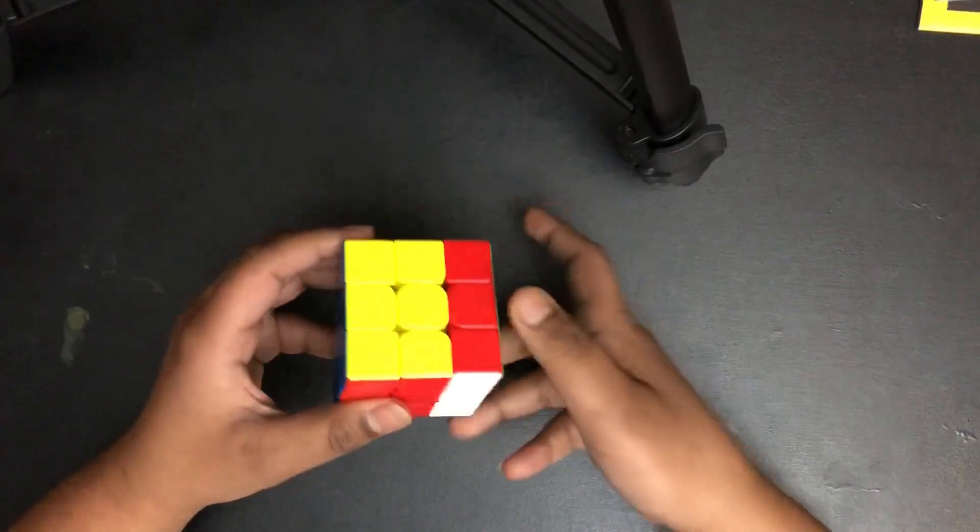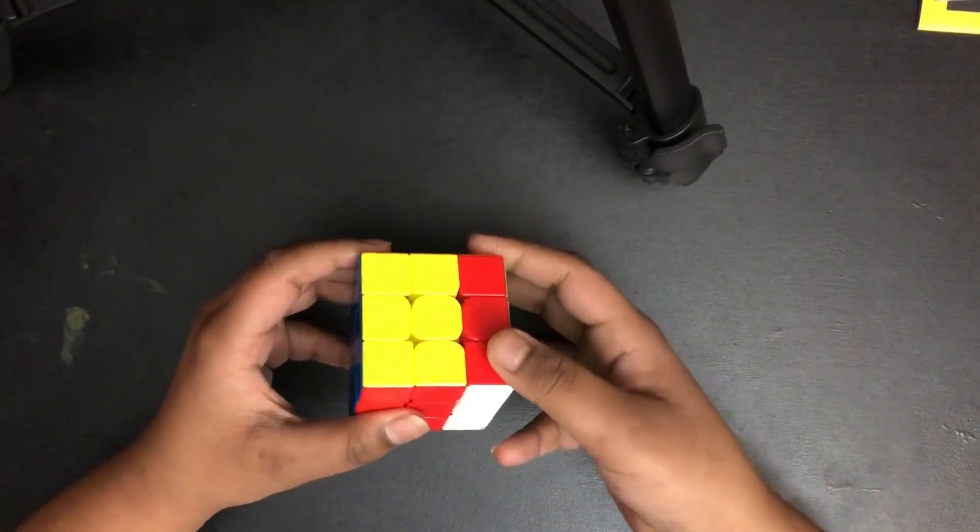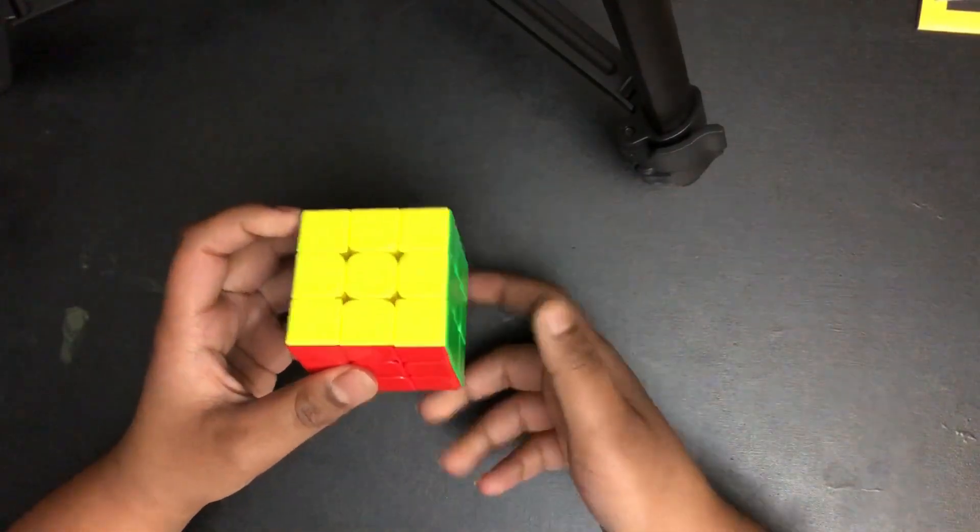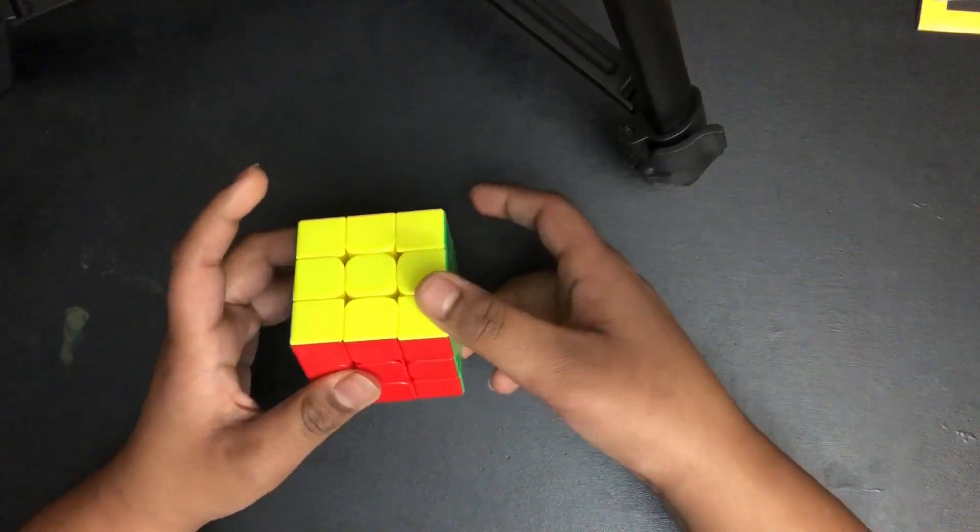So we did this for R, and we undo that R. But if you're first asked to do R prime, then just do this.